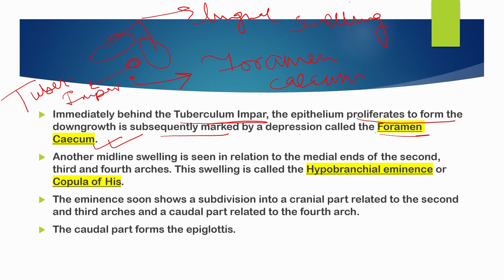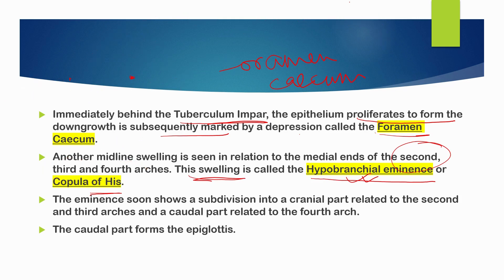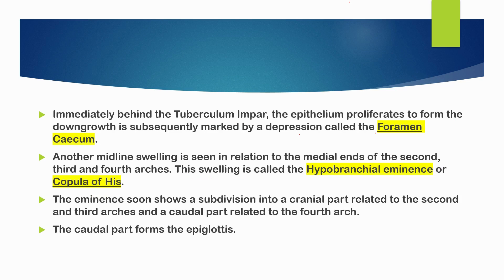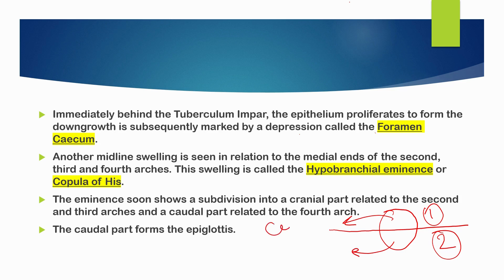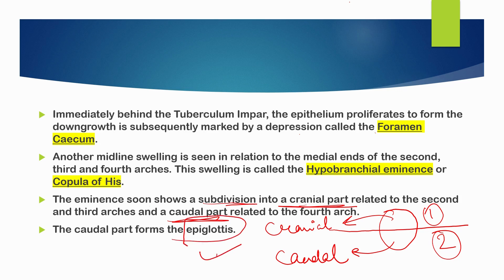Another midline swelling is seen in relation to the medial ends of the second, third, and fourth arches, known as the hypobranchial eminence, or copula of His. This hypobranchial eminence divides itself into two parts: the cranial part and the caudal part. The caudal part forms the epiglottis.